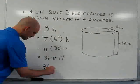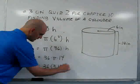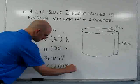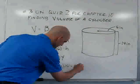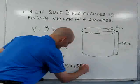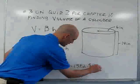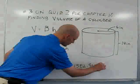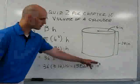We end up with thirty-six times three point one four times fourteen, which gives us one thousand five hundred eighty-two point five six inches cubed, because volume is always in cubic units.